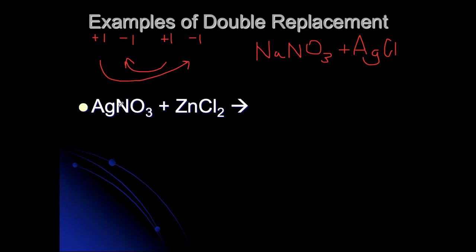The next example is AgNO3 plus ZnCl2. Ag is always a plus one, NO3 is a minus one, Zn is always a plus two, and chlorine by itself is a minus one. Remember, these charges are on your periodic tables.